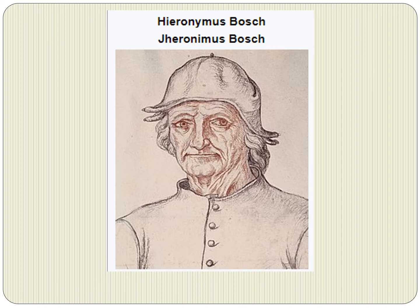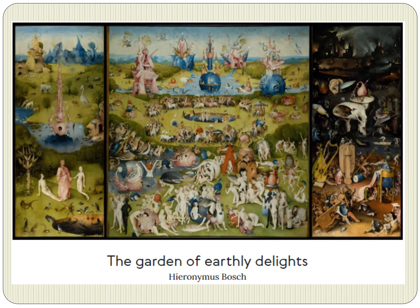Hieronymus Bosch was a Dutch painter who lived from 1450 to 1516. His work, generally oil on oak wood, mainly contains fantastic illustrations of religious themes. The Garden of Earthly Delights is a triptych that can be folded open; Bosch uses chronological order to present a gradual fall of man into sin. It consists of four images.